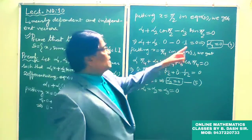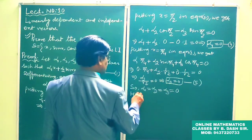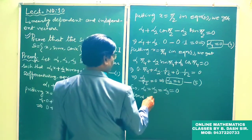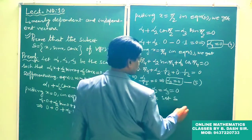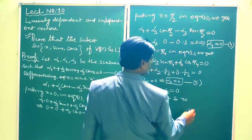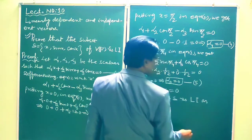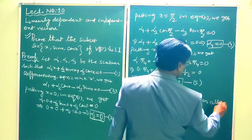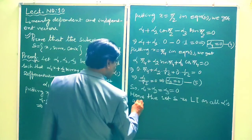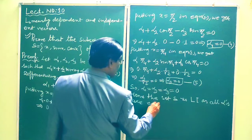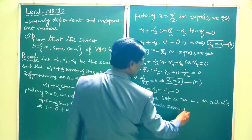So α3 = 0, α1 = 0, and α2 = 0. Hence the set S is linearly independent as all alphas are equal to 0. Proved.